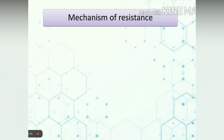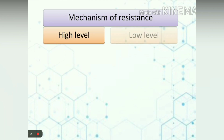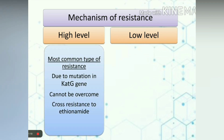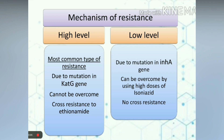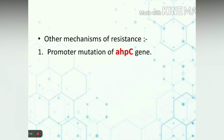Mechanism of resistance: there are two types — high-level and low-level resistance. High-level resistance is the most common type; it is due to mutation in the KatG gene, which prevents conversion of the prodrug into its active form. This cannot be overcome, and sometimes cross-resistance to ethionamide is seen. Low-level resistance is due to mutation in the InhA gene, which prevents formation of the complex. This can be overcome by using high doses of isoniazid, and no cross-resistance with other drugs is seen. Other mechanisms include promoter mutation in the AhpC gene and mutation in the KasA gene.